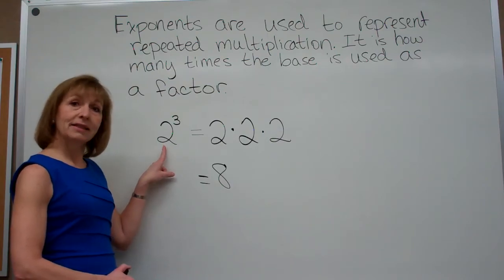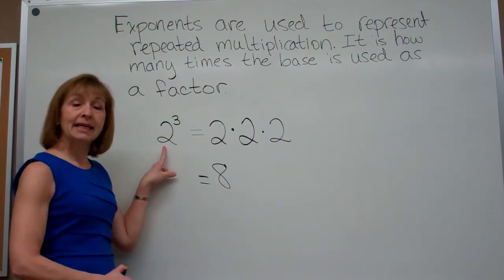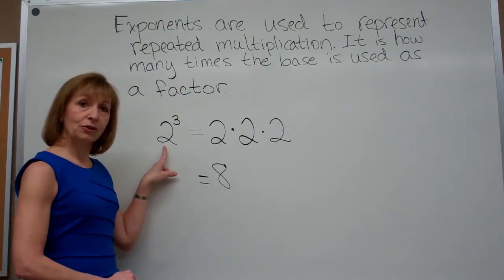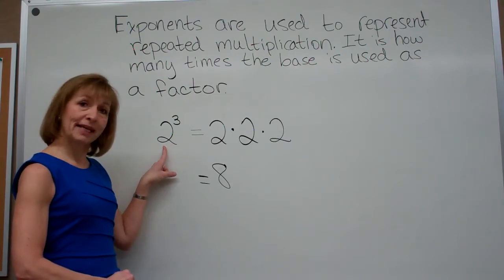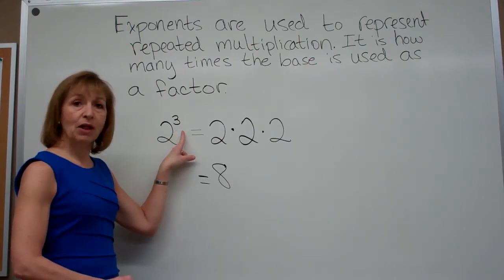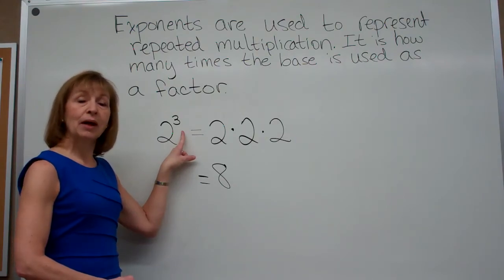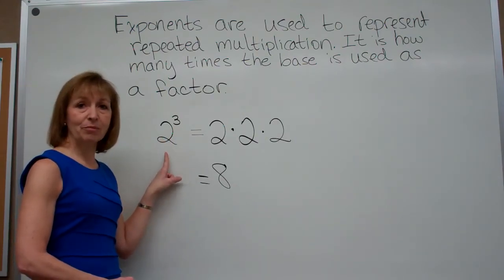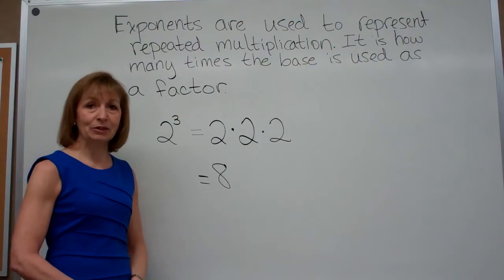The base, 2 in this case, is the factor that you are to use in the repeated multiplication. And the exponent, the number that's smaller and up to the right, tells you how many factors of that base you are to use in the expression.